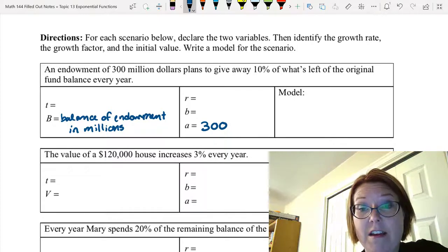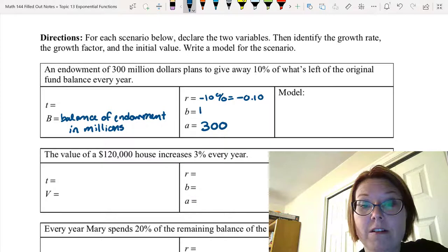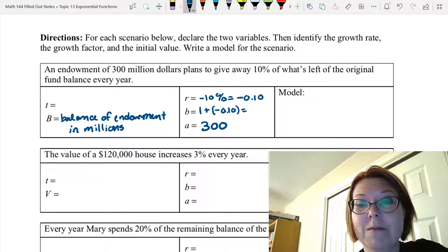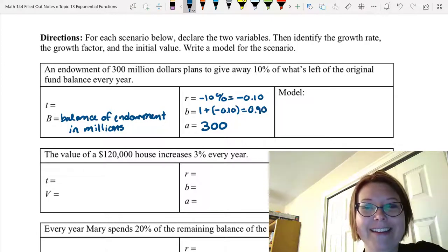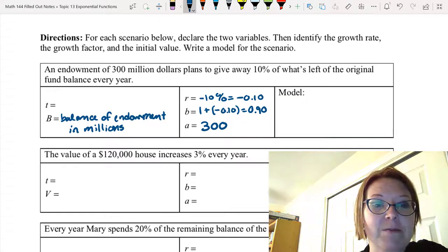Okay, then we want to give away 10% of what's left every year. So we're declining. Our rate is going to be minus 10% or negative 0.10. So B is one plus R. So that's one plus negative 0.10, which is 0.90. There's 90% remaining at the end of every year. And the time is going to be T time in years.